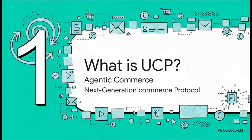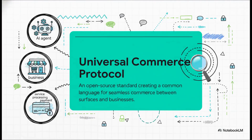What is this Universal Commerce Protocol? At its heart, it's really the foundational plumbing for a brand new way of shopping online — this new era of agentic commerce. Think of UCP as an open-source rulebook, or maybe even a universal translator. It's a common language that lets all the different players in an online purchase — the AI agent you're talking to, the store you're buying from, and the payment service — all communicate with each other smoothly and, most importantly, securely.